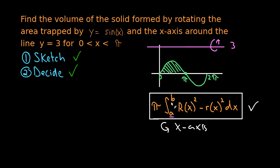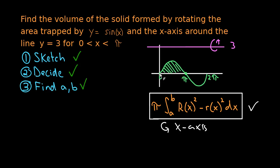We need to fill in the bounds of integration A and B, and find the outer and inner radius. Step three: find the bounds. In this problem it's quite easy — done for us — because sine intersects the x-axis at 0 and pi, and we're only looking at the area between 0 and pi. So A is the leftmost point, 0, and B is the rightmost point, pi.